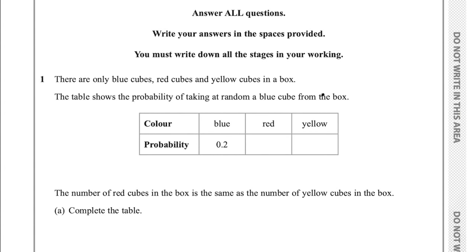Question 1 says there are only blue cubes, red cubes and yellow cubes in a box. The table shows the probability of taking at random a blue cube from the box. We have the table with blue, red and yellow, and the probability of blue is 0.2. The number of red cubes in the box is the same as the number of yellow cubes. Part A says complete the table.